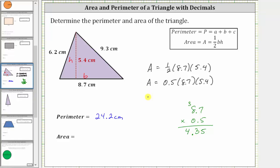So now we know the area is equal to 4.35 times 5.4. So now let's determine this product.